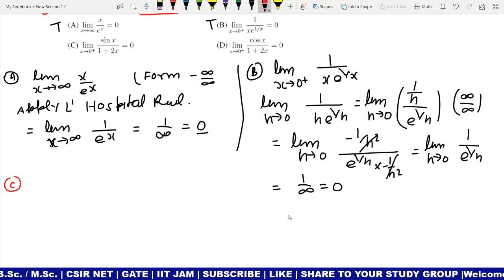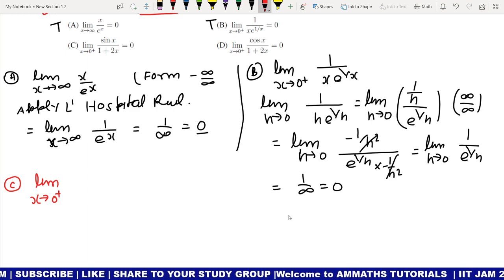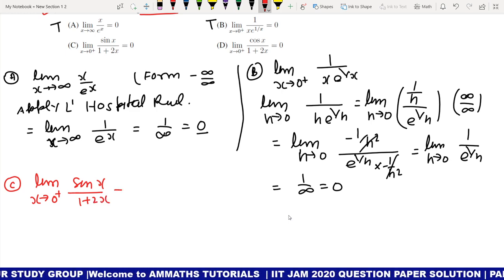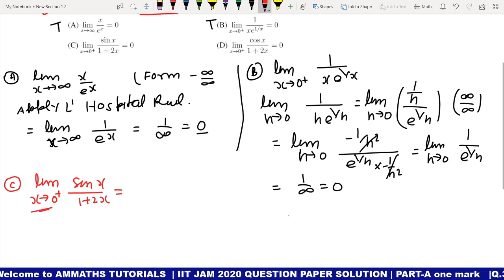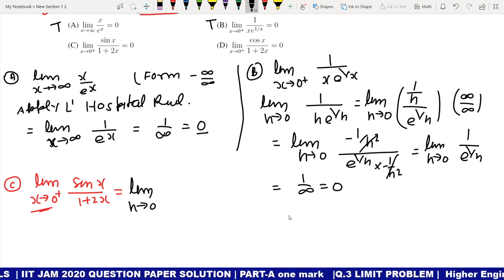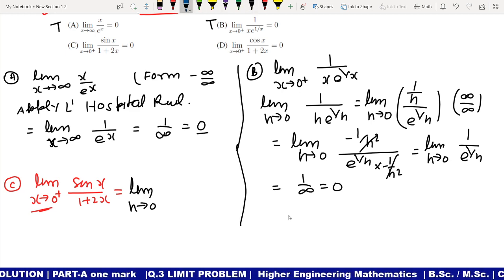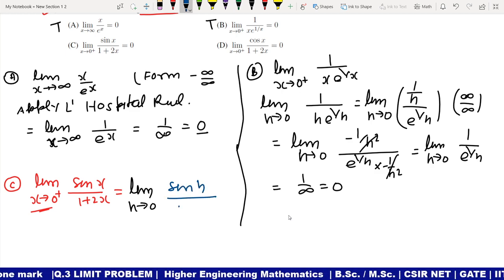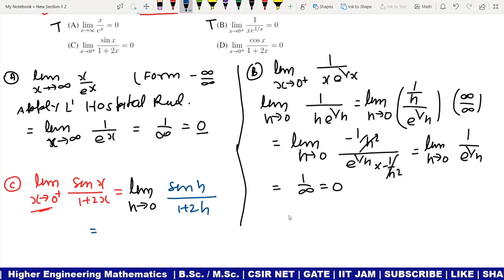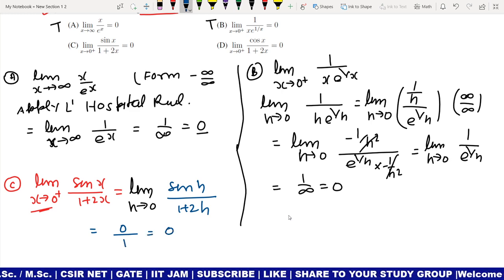Limit x tending to 0 plus, sin x upon 1 plus 2x. Limit h tending to 0, sin h upon 1 plus 2h. Sin 0 is 0 and here is 1 by 0, so this option is true.